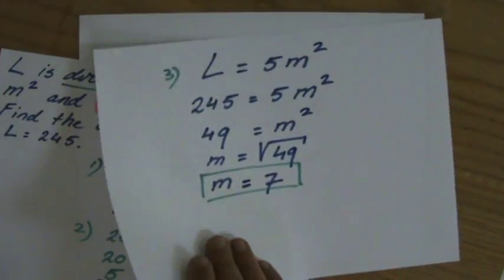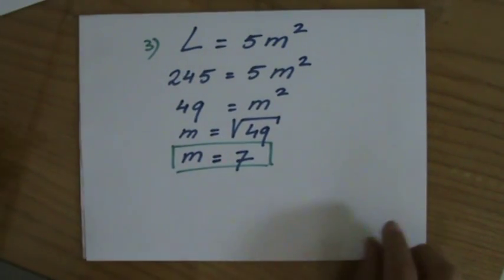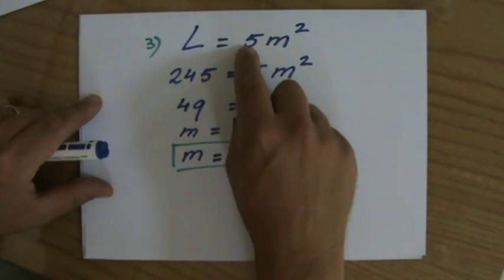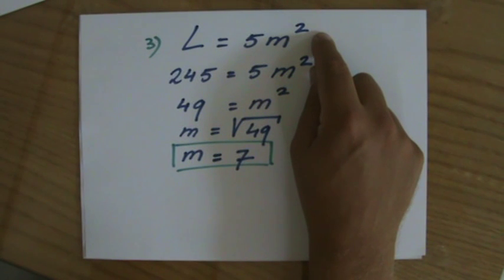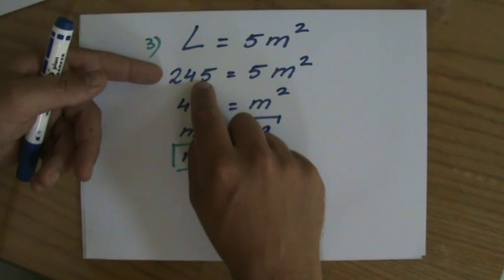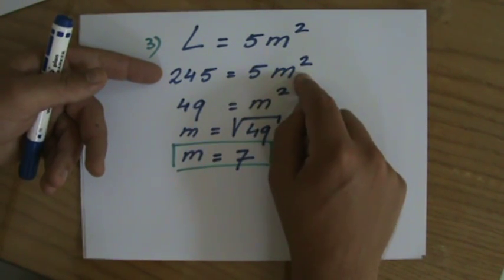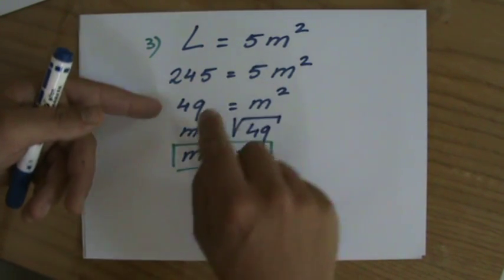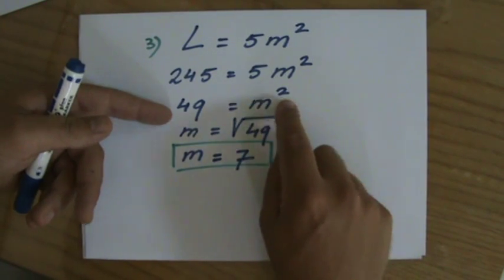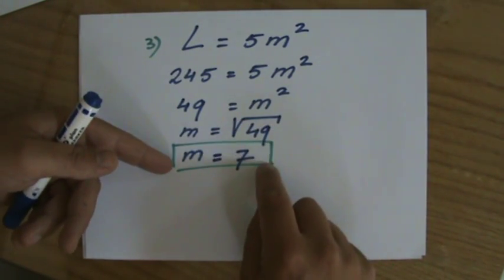So the equation for this particular situation is L equals 5m squared. And they ask me then, what is m when L is 245? So 245 equals 5m squared. Divide both sides by 5. 49 equals m squared. So m is the square root of 49, which is 7.